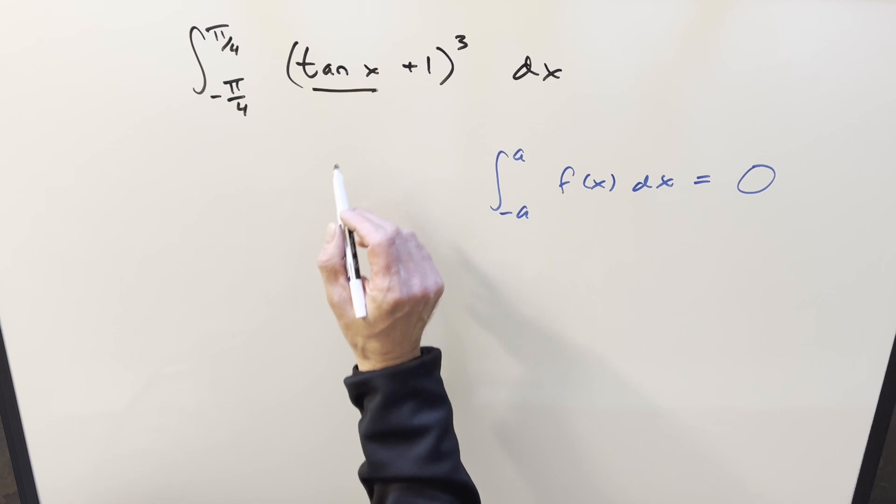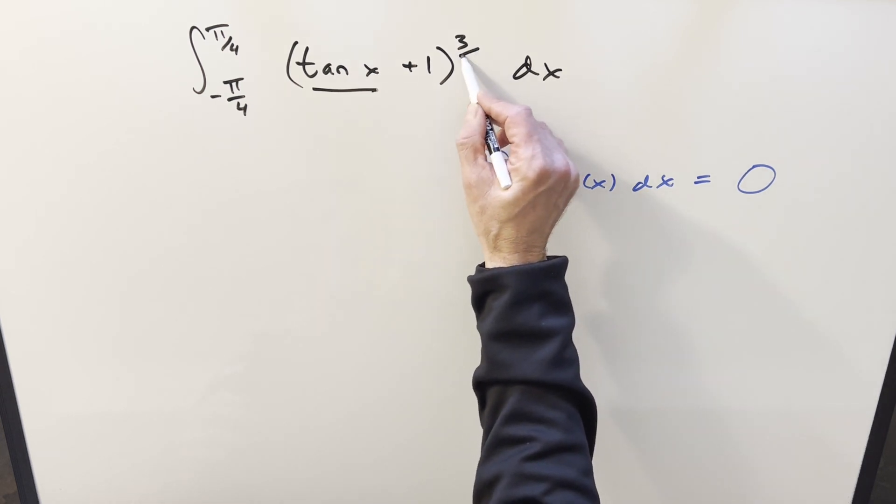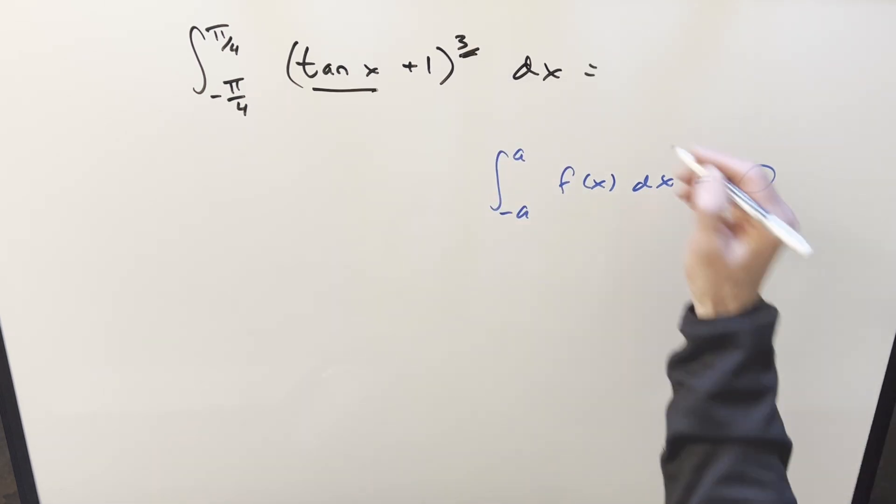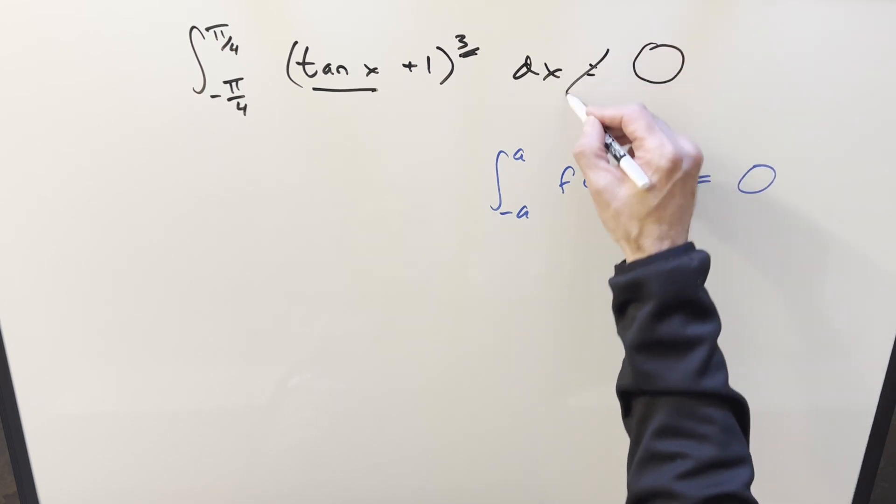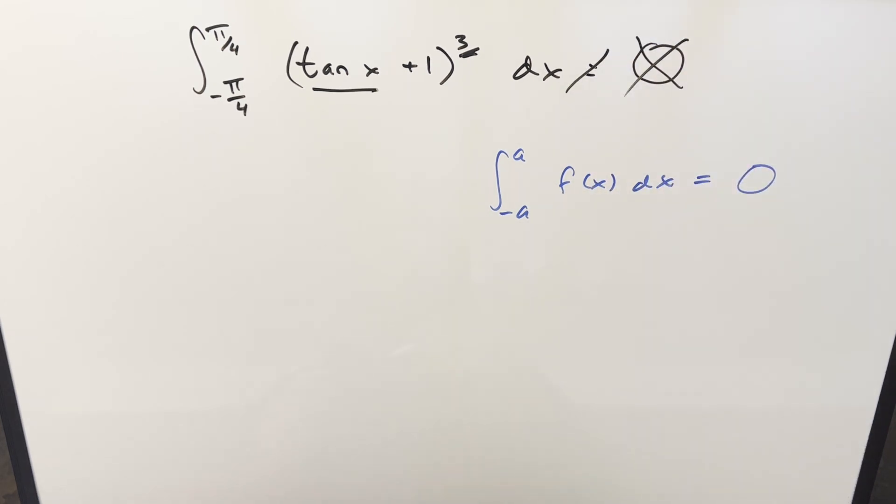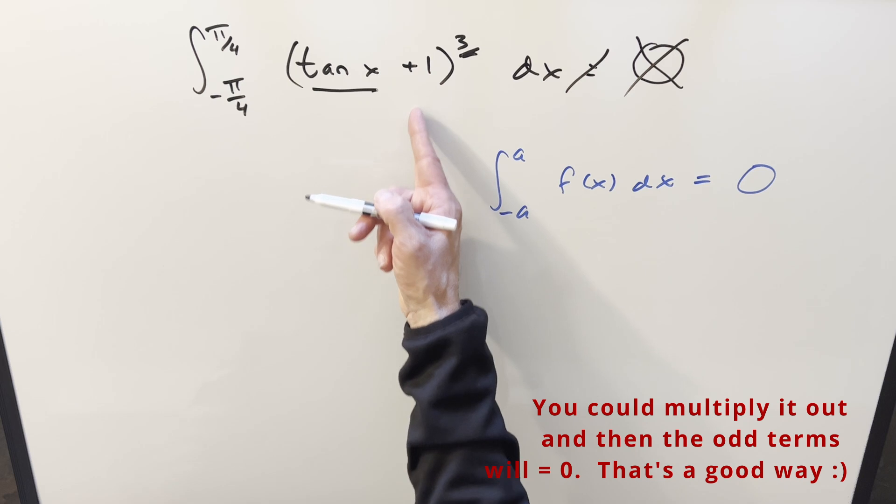We have an odd function inside and the power is odd. So I can just go ahead and put down the answer of 0, except this is not going to be correct because the problem is really the plus 1.